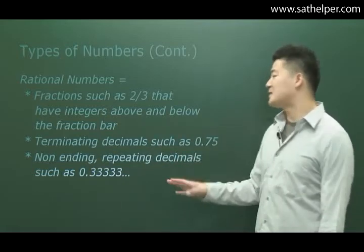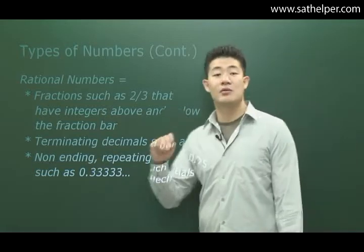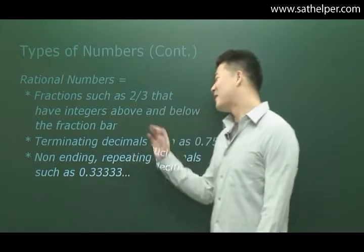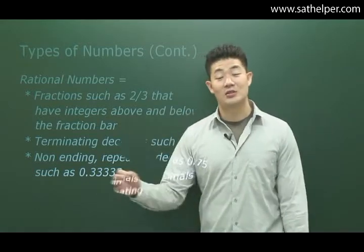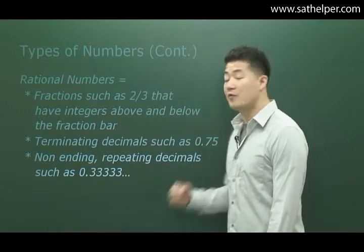Same thing, non-ending repeating decimals such as 0.333333. So this is a number that you have the same thing and it just repeats over and over and over again.